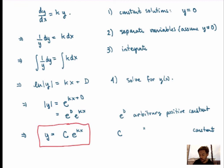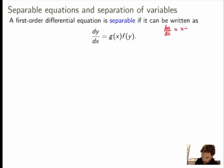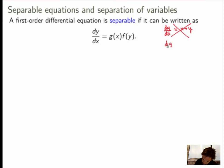Let me summarize the method of separation of variables in the more general context of separable equations. When are we able to separate variables? We say that a first order differential equation is separable if it can be written as dy/dx equal to a product of a function of x and a function of y. Not all differential equations can be written like that. For example, dy/dx = x + y is not separable because you cannot write x + y as a product of a function of x and a function of y — it's a sum of two functions. But something like dy/dx = x · y would be separable because the right hand side is a product of a function of x and a function of y.